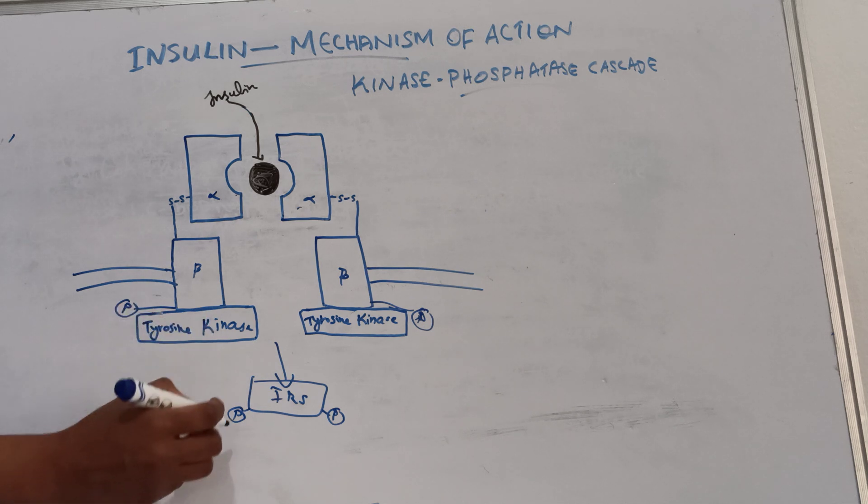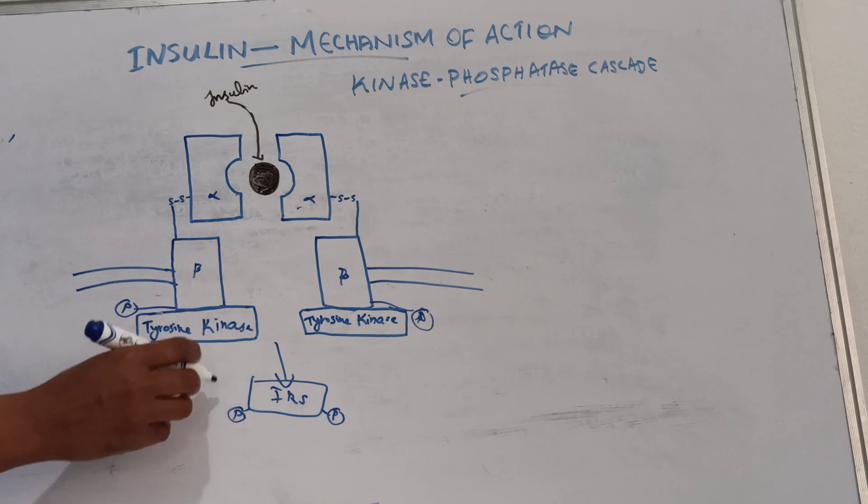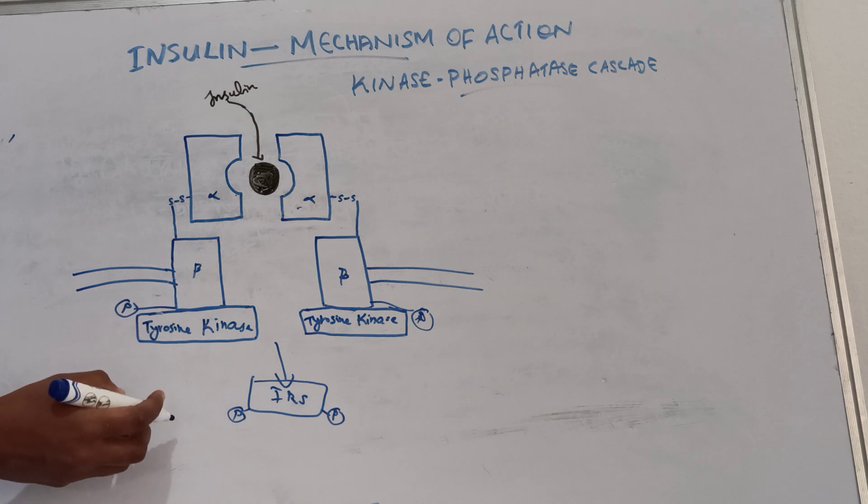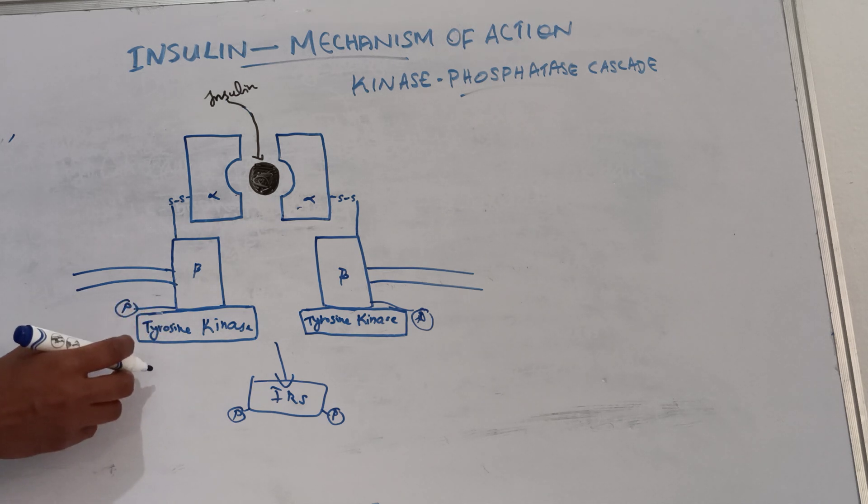Phosphorylation of insulin receptor substrate or IRS causes activation of various protein kinases, including PI3 kinases and MAP kinases. PI3 kinase means phosphatidylinositol kinase and MAP kinase, mitogen activated protein kinase.